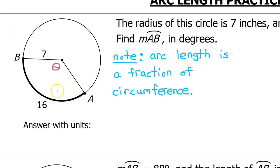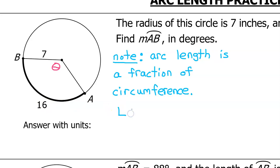I know a couple different ways to solve this problem, but for this video I'm going to think of arc length as a fraction of the circumference. This makes sense because the circumference is the length of the entire circle, if it were made out of string, and the arc length is a piece of that string. So the arc length is a fraction of the circumference. I'm going to call the arc length L, so I can sort of make a formula out of this thought.